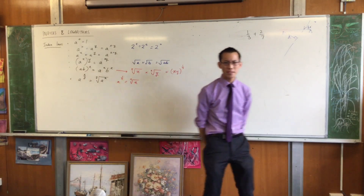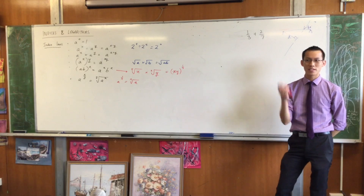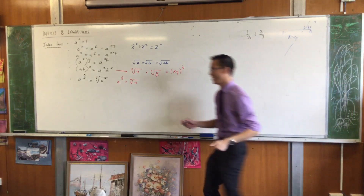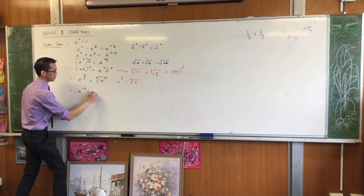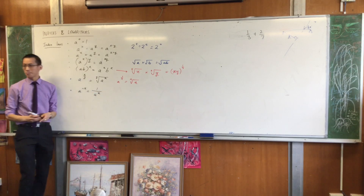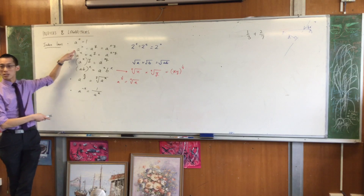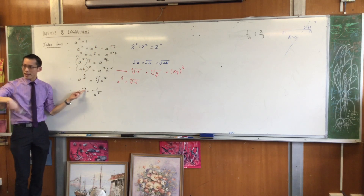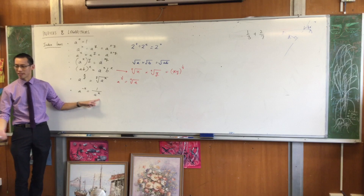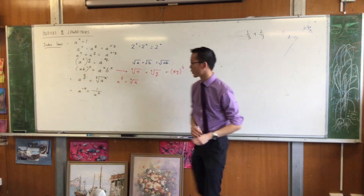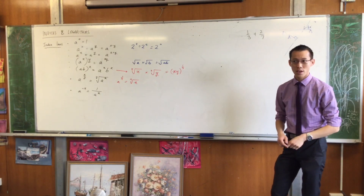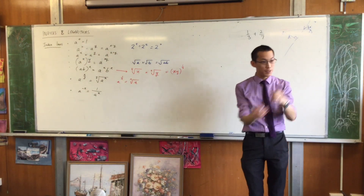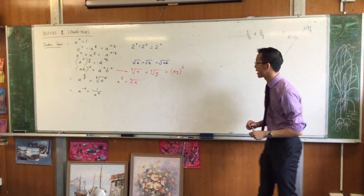Have we got all the index laws? What about negative indices? When you divide by successive terms, eventually you get a negative exponent — and repeated division is another way of writing a fraction. So a negative index represents a reciprocal. Each of these index laws has a flip side, which is why this topic is headed 'Indices and Logs' — every index law gives birth to a corresponding log law.